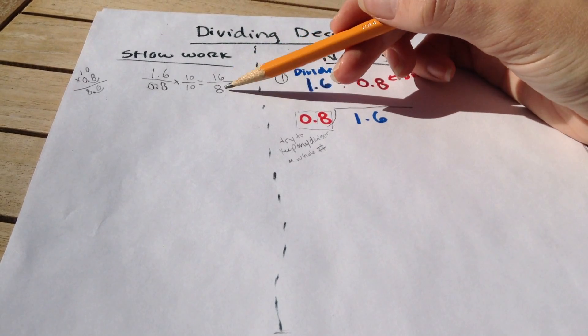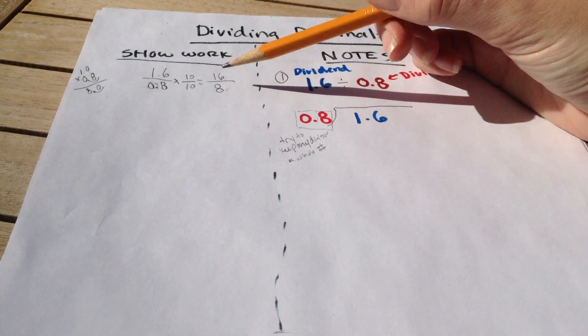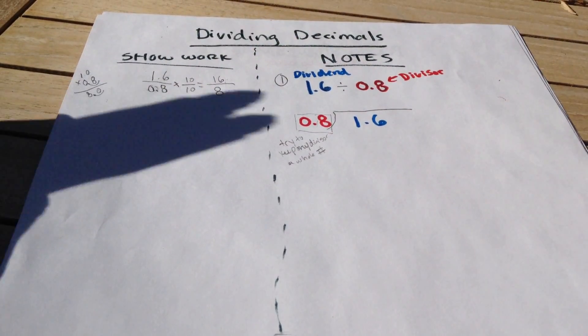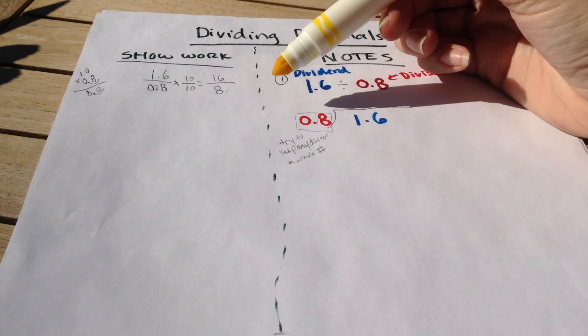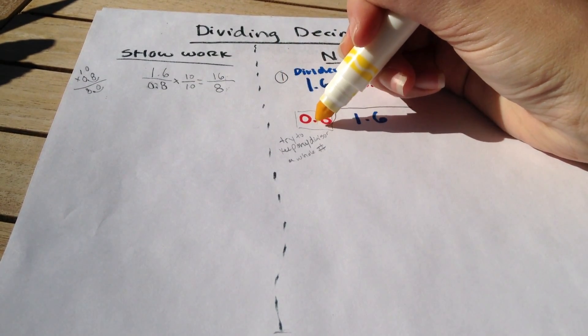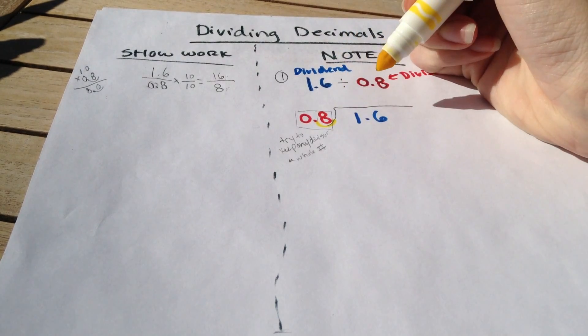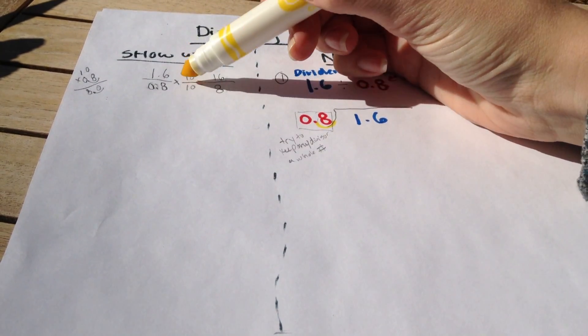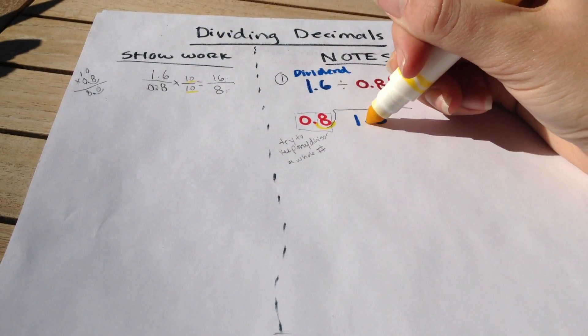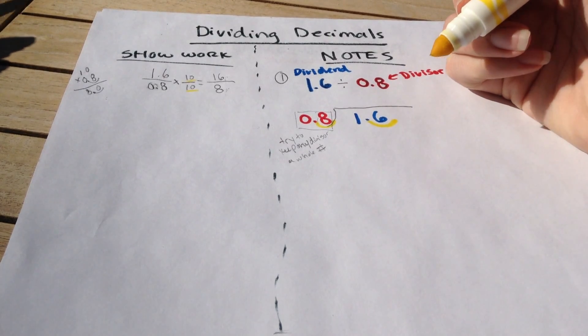That's a lot more simple to be able to divide 16 and 8 than to be able to divide 1.6 and 0.8. So essentially, what I've done here by multiplying it by 10, if I look back at my original equation, I can see that all I did was actually just move my decimal place once to the right. And because I did it to both my numerator and my denominator, every time I'm moving that, I'm moving my decimal one place to the right for both my dividend and my divisor.